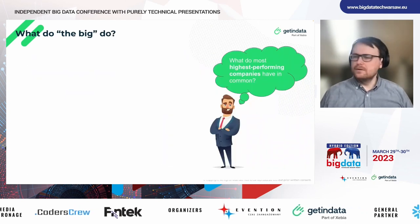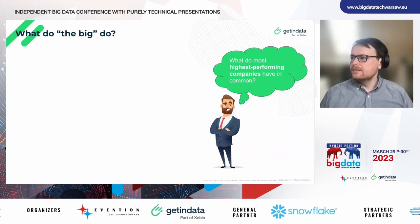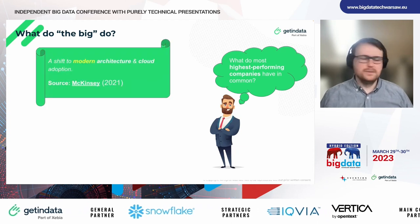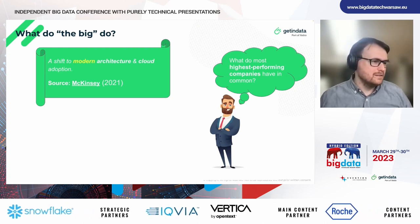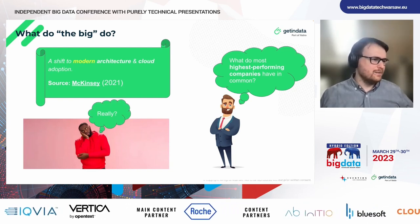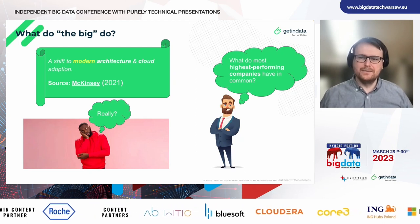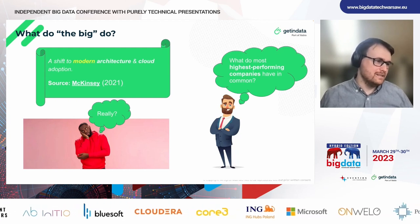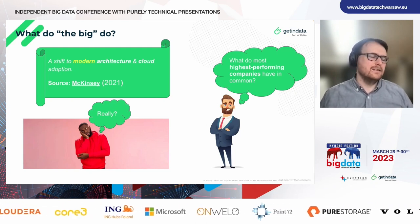Before we start, let's maybe start with a very short quiz. What do most highest performing companies have in common? Well, according to a McKinsey survey: shift to modern architecture and cloud adoption. You might think, okay, this guy brings another cliche — you might start throwing tomatoes and buzzword bingo papers. But let's stay with me. I'll try first to define what this buzzword is all about. As always, in each buzzword there is some genesis that lies behind it.